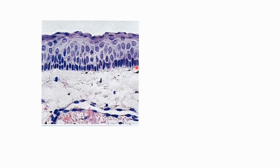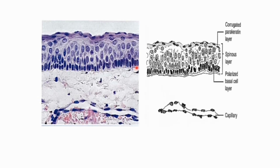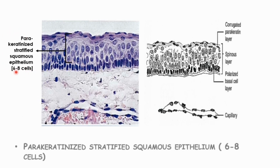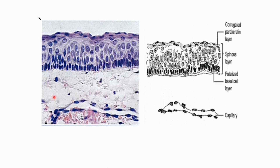Histopathology of odontogenic keratocyst. The microscopical view shows parakeratinized stratified squamous epithelium which is 6 to 8 cells in thickness. It exhibits a wavy or corrugated appearance because of the presence of parakeratotic cells.